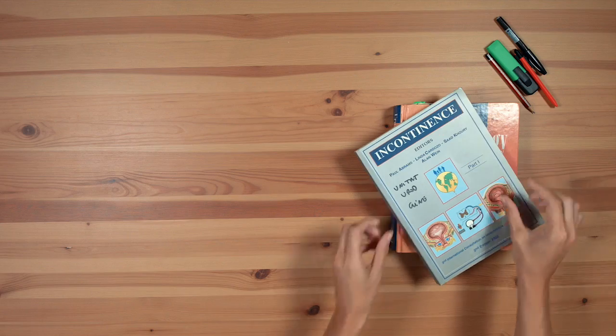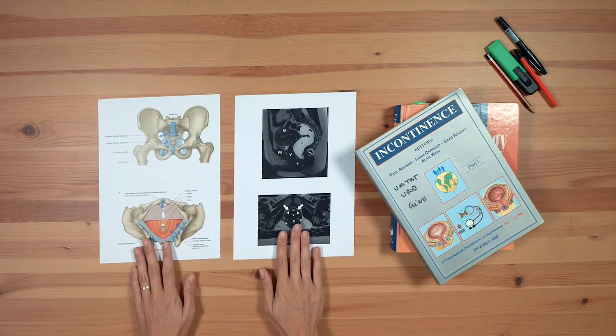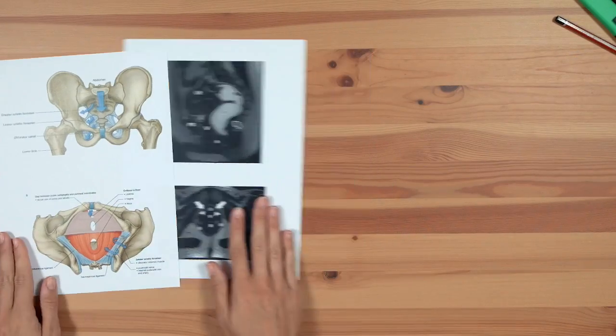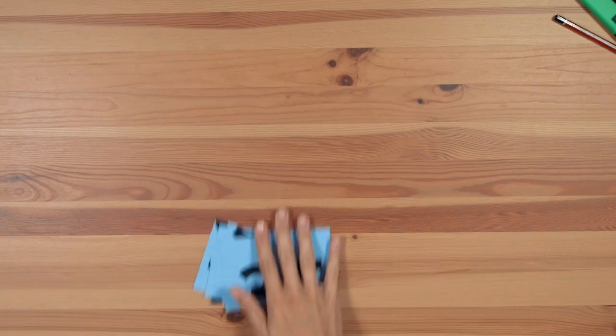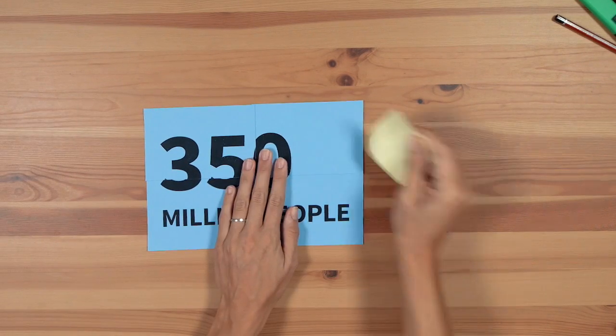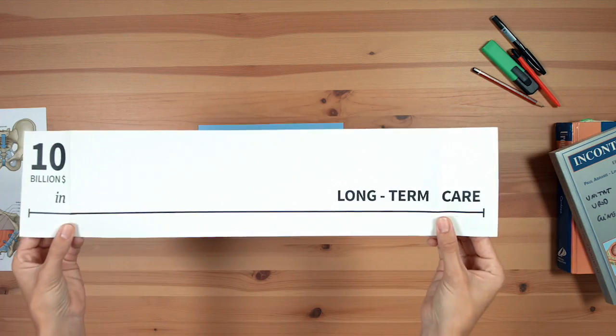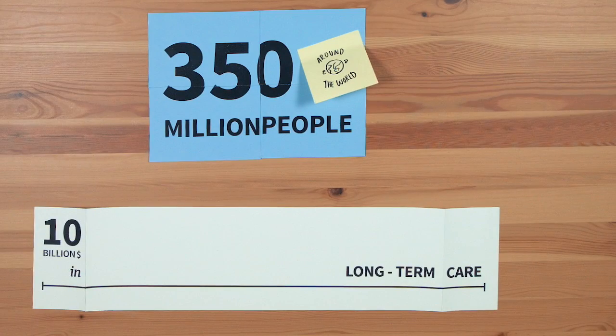Urinary incontinence is any involuntary urine leakage. It is not part of the natural aging process. It is a disease that affects more than 350 million people around the world, costing roughly 10 billion dollars in long-term care.